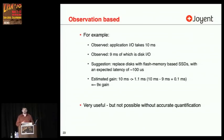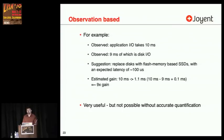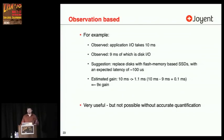For an observation-based style of analysis: if it was observed that application IO takes 10 milliseconds, and 9 milliseconds of that was disk IO, a suggestion could be to replace disks with flash memory-based SSDs with an expected latency of 100 microseconds. Based on some concrete numbers like this, we can do a little bit of math and come up with an expected gain. It was 10 milliseconds, we think it's going to be 1.1 on average — this could be a 9x gain for the customer. Not possible without accurate quantification.